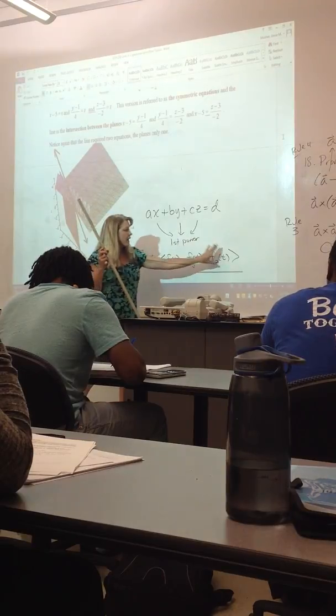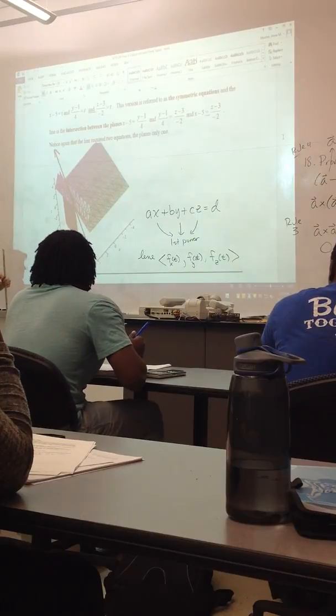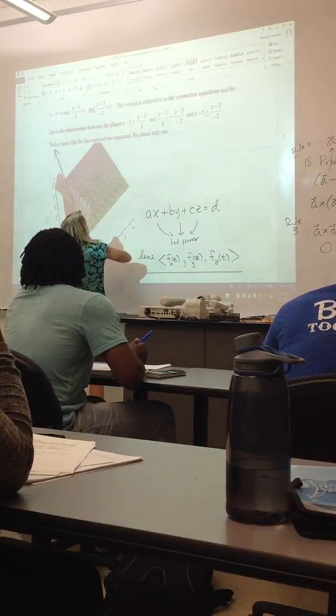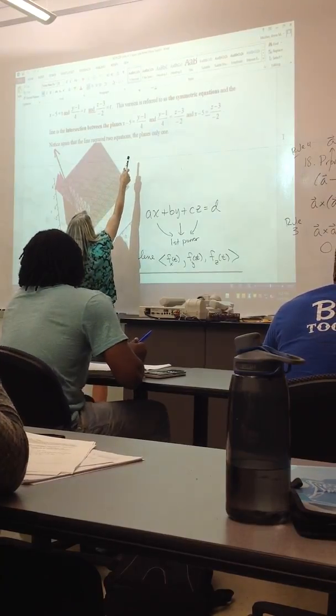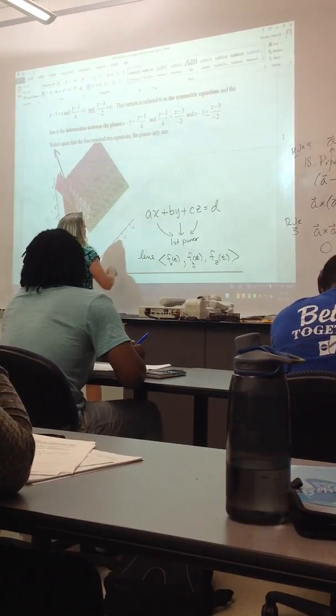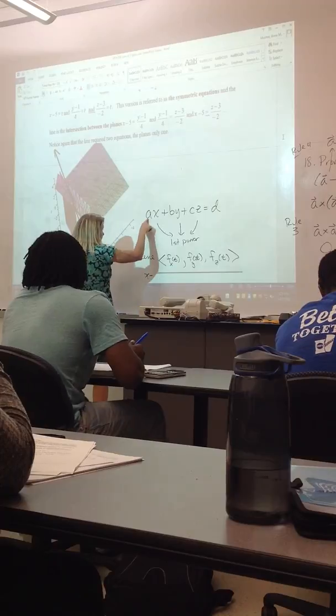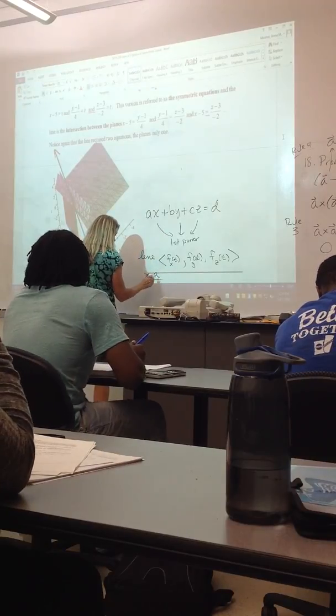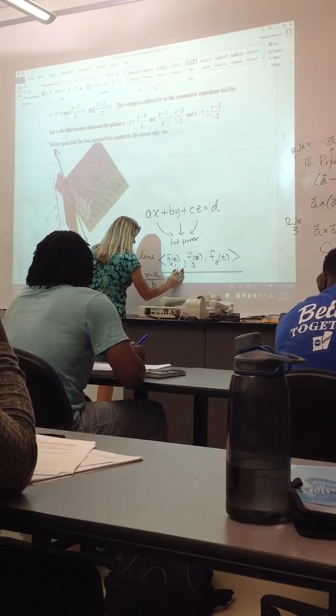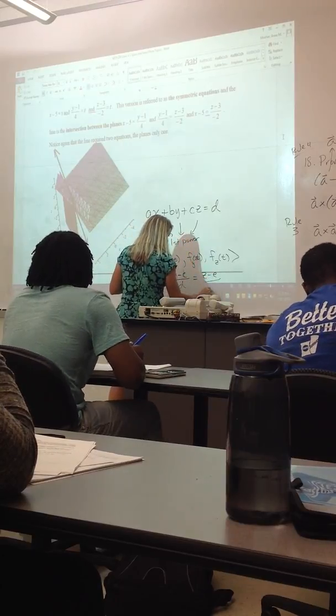Now once you have those directions, you can actually kind of combine them, and there's another form that you can see up here. Like, do you see how you have x minus 5 equals y minus 1 over 4, and y minus 1 over 4 equals z minus 3 over 2. So you could have x minus some a over some b equals y minus c over some b equals z minus e over some f, okay?